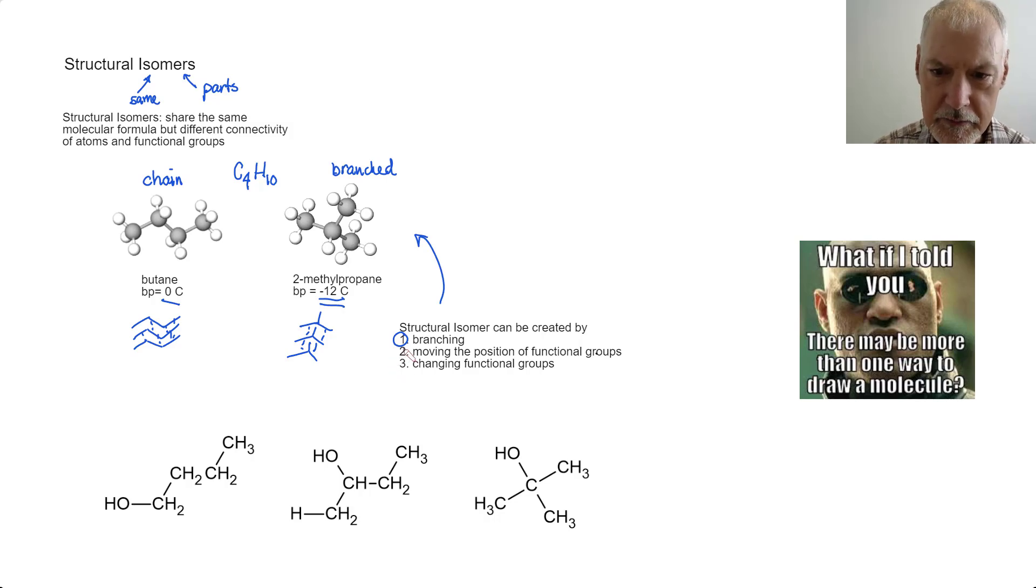Another technique of creating an isomer is to move the particular functional group. So, for this example, I have the hydroxyl functional group. And here, I've moved and changed its position in the chain.